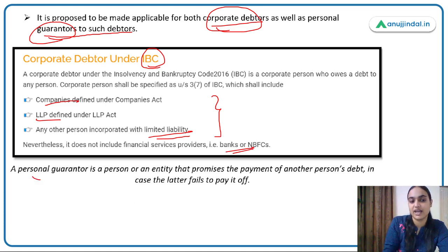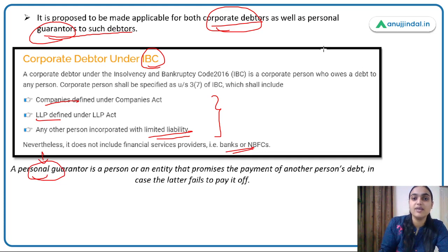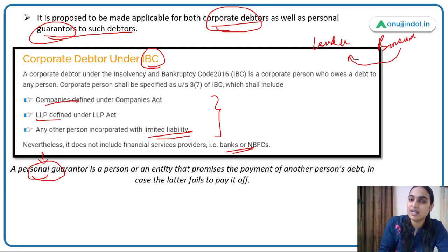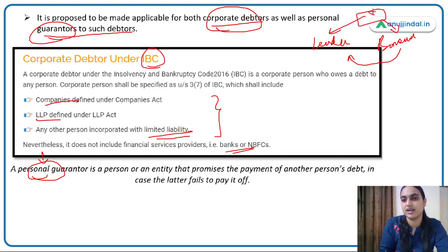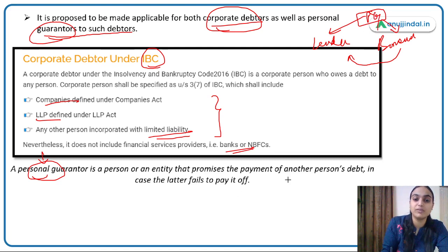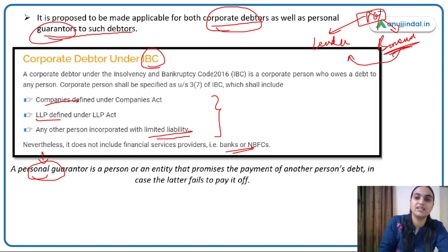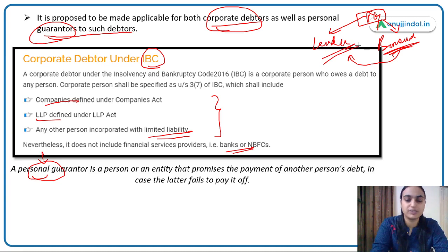A personal guarantor is a person or entity that promises payment of another person's debt in case the borrower fails to pay. So if the borrower fails to repay the lender, this guarantor will pay the money on behalf of the borrower.